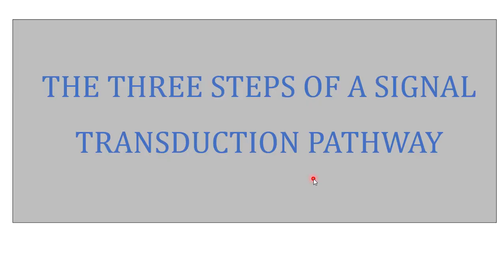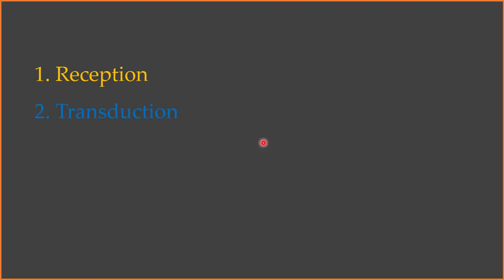Welcome back to this next video. In this particular video, I am going to tell you what are the three steps of a signal transduction pathway. The first step is known as the reception, the second step is known as the transduction, and the third step in the signaling pathway is known as the response. Let us have a detailed discussion on these three steps of a signal transduction pathway.